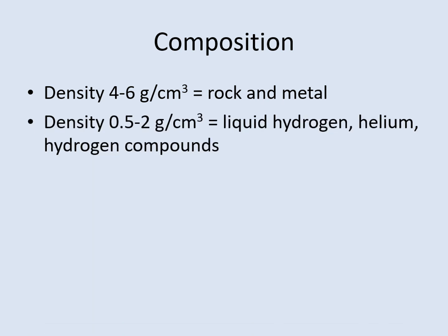Note that there is one extra step in this question. You need to describe what composition this density implies. As we've already seen, planets with densities between 4 and 6 grams per cubic centimeter, like the one in our example, are probably made mostly of rock and metal. On the other hand, planets with densities between 0.5 and 2 grams per cubic centimeter are mostly less dense materials, like liquid hydrogen, helium, and hydrogen compounds. If the density is between 2 and 4 grams per cubic centimeter, then that suggests comparable amounts of both high and low density materials.